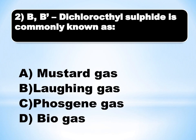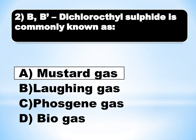If we see the 2nd MCQ: beta-beta-dichloro-ethyl-sulfide is commonly known as mustard gas. The answer will be A (alpha).